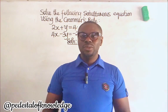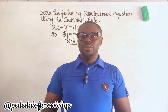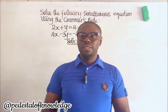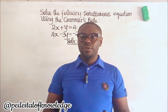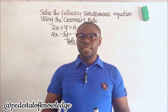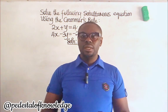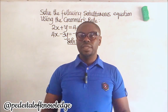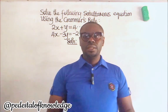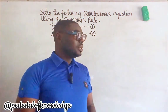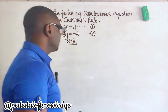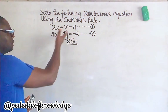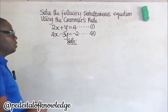Let's see how we can use Cramer's Rule to find the solutions of a simultaneous equation, apart from the three general methods: the substitution method, the elimination method, and the graphical method. Now, the question says: use Cramer's Rule to find the solutions of the set of simultaneous equations.